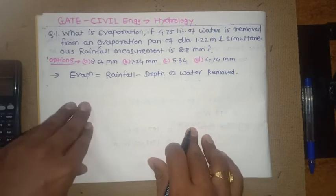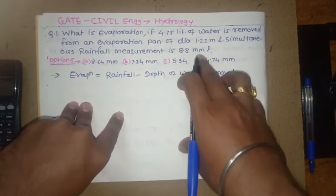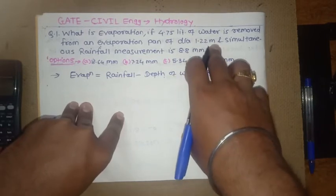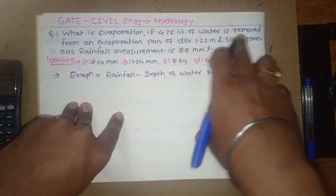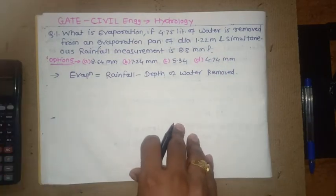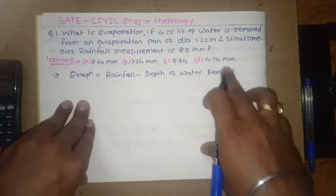Now see here, answer required in mm, rainfall is also given in mm, but diameter of pan is in meters and the water collected in liters. So first of all we have to convert all units in similar manner or either in mm.